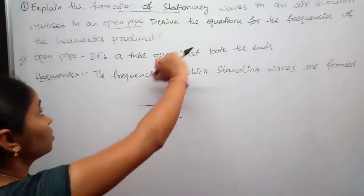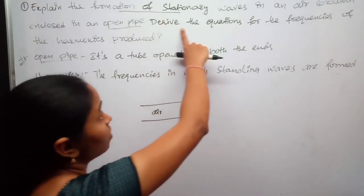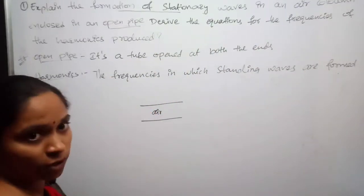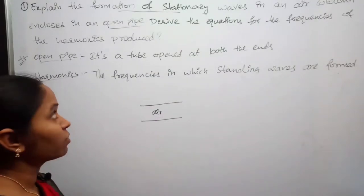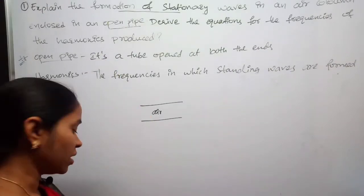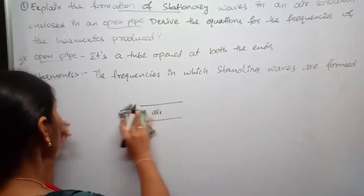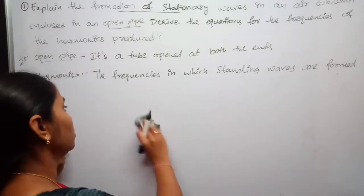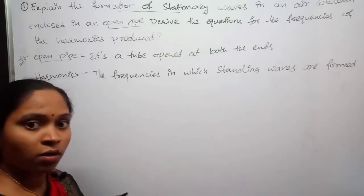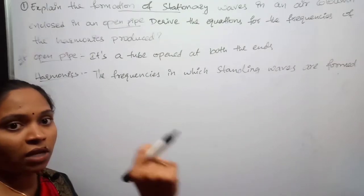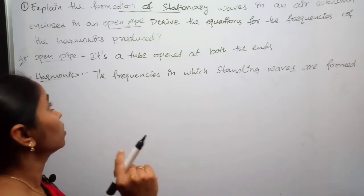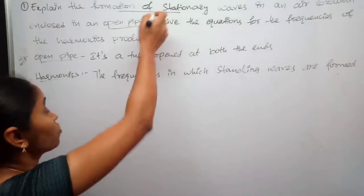The question continues: derive the equations for the frequencies of harmonics produced — at what frequencies will the harmonics be produced? The frequencies at which standing waves are formed are called harmonics.